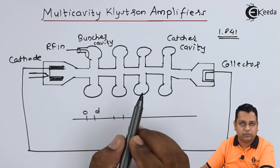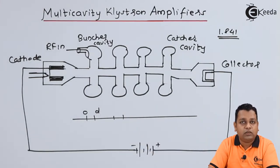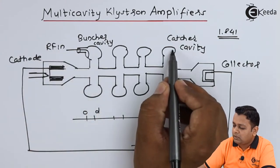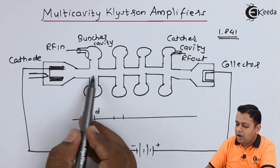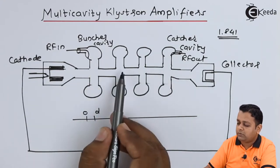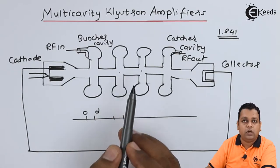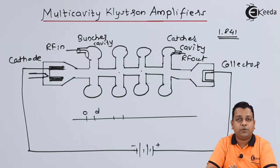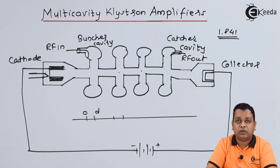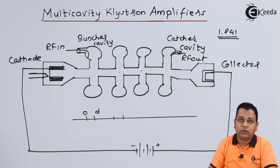In the two-cavity klystron, interaction with the microwave signal took place at only two places. Now it has been extended to additional gap spacings because we have increased the number of re-entrant cavities. From the catcher cavity we take the output — RF out. As we switch from two-cavity klystron to multi-cavity klystron, the number of cavities increases. In the two-cavity klystron there was only one buncher cavity and one catcher cavity.